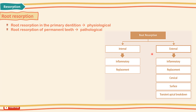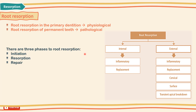Depending on the resorption location in relation to the root or root canal surface, root resorption may be classified as internal or external. Internal root resorption includes inflammatory and replacement subtypes, and external root resorption includes inflammatory, replacement, cervical surface, and transient breakdown. There are three phases of the root resorption process: initiation, resorption, and repair.